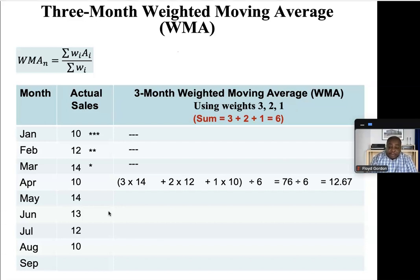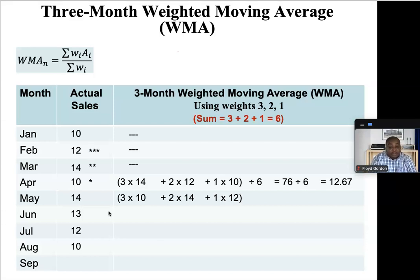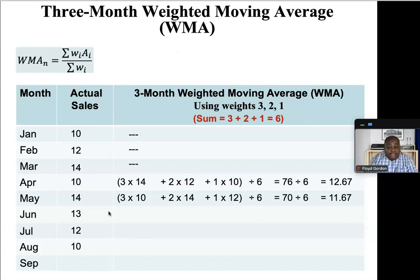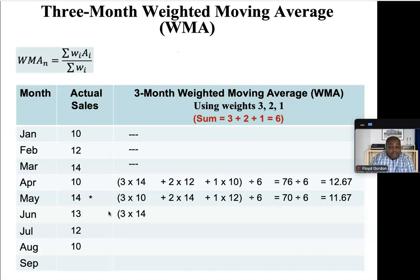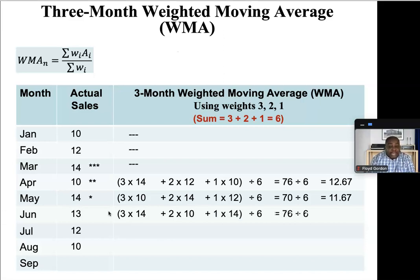When we add those up we get 76 divided by six, giving a forecast of 12.67 for April. Moving on to May: highest weight three multiplied by the most recent month April, so three times ten, plus two times fourteen, plus one times twelve, divided by six. That gives us 72 divided by six, or 11.67 as our forecast for May. Moving on to June: highest weight three multiplied by 14 for May, so three times 14, plus two times ten for April, plus one times fourteen for March, giving 76 divided by six, or 12.67 as the forecast for June.